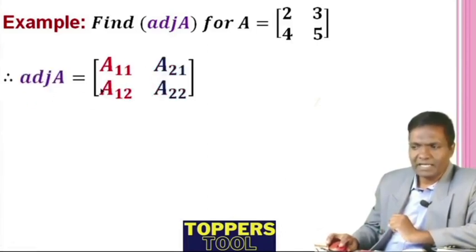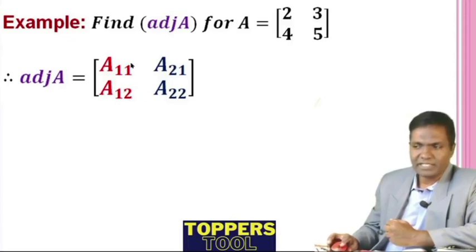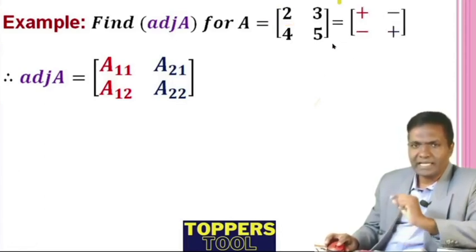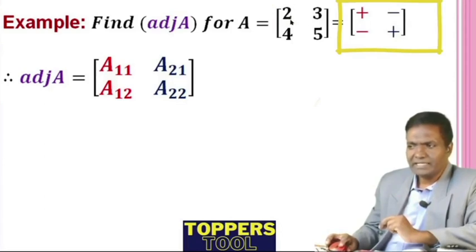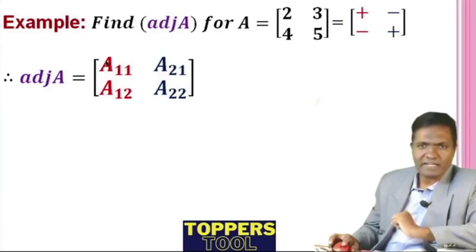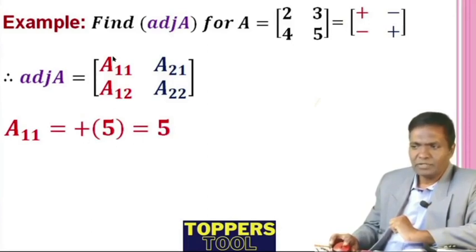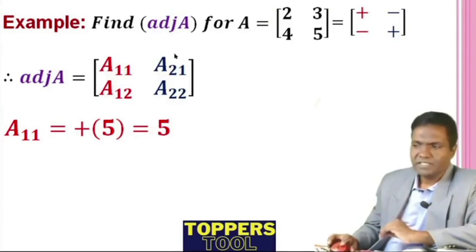So adjoint of A is the transpose of the cofactor matrix. A11 is the cofactor of this element — it is plus, so plus into the remaining element, that is 5. So A11 is 5. A12 is the cofactor of this element — it is minus, so minus into 4, that is minus 4.